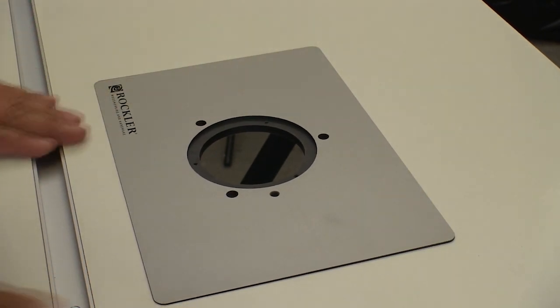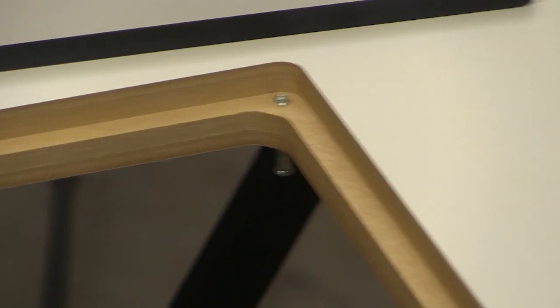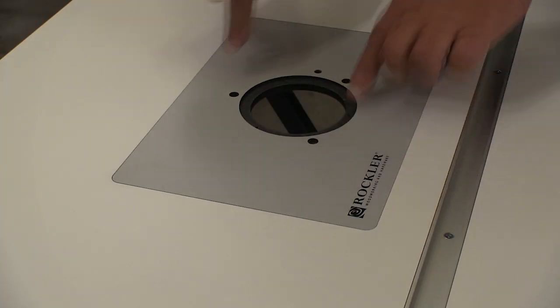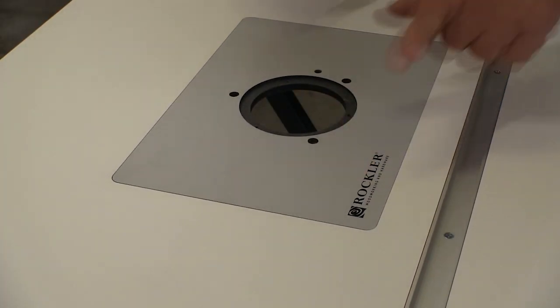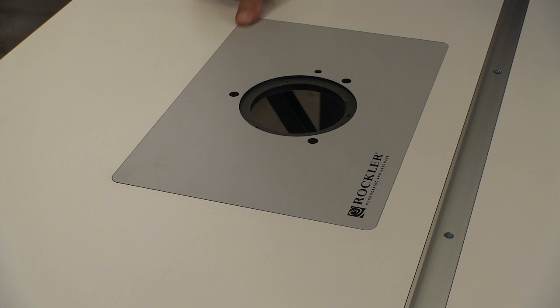Now we can set the router plate into place and see how badly it rocks. This is where we use those leveling screws to get the plate flush with the surface and eliminate any rocking. This is important, so you want to take your time and get this right.